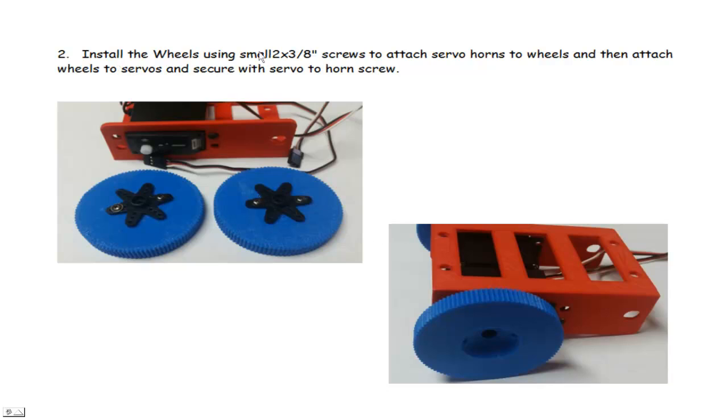Next, we're going to attach the wheels. We're going to install the wheels using small 2x3/8 inch screws. They're pretty small screws. You'll find some of these in the package with the servos and the horns. There's usually enough screws in there for attaching the horns.